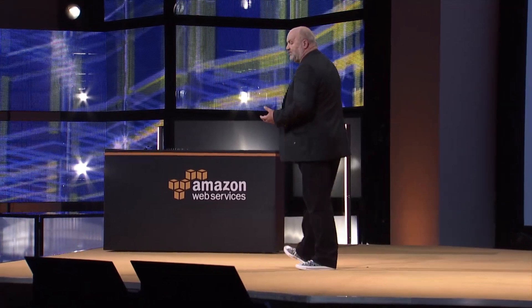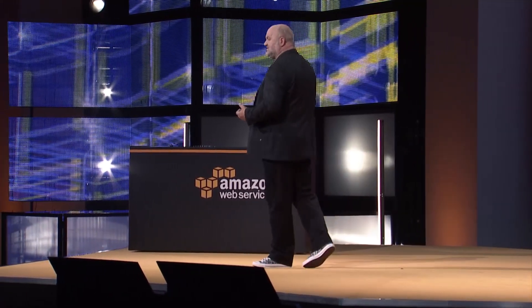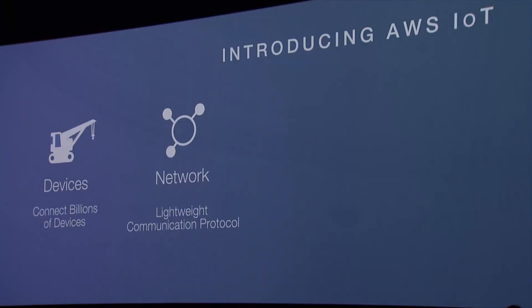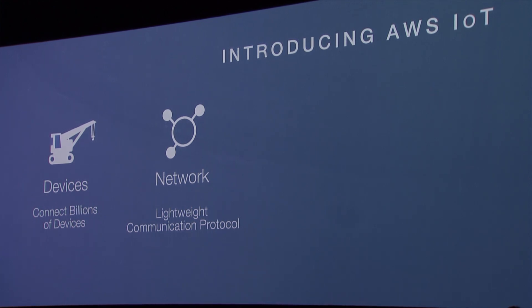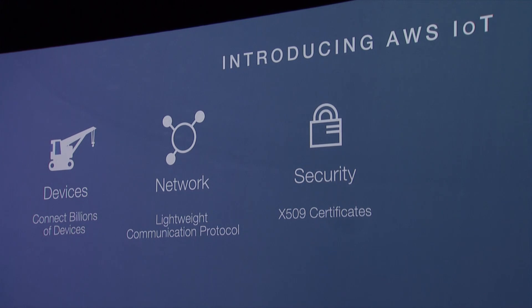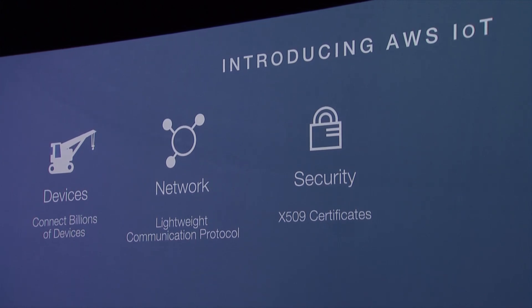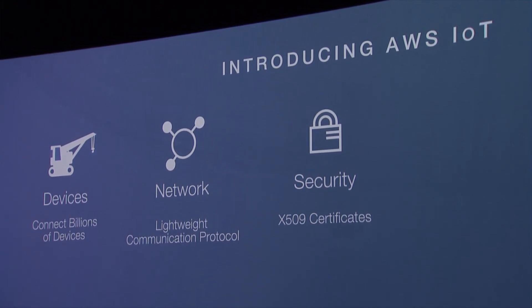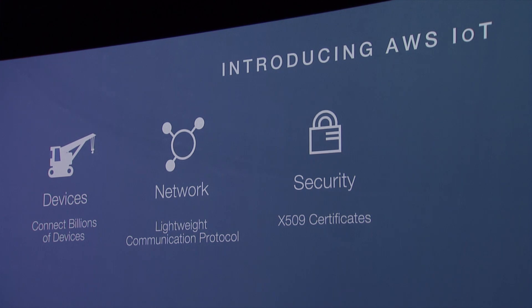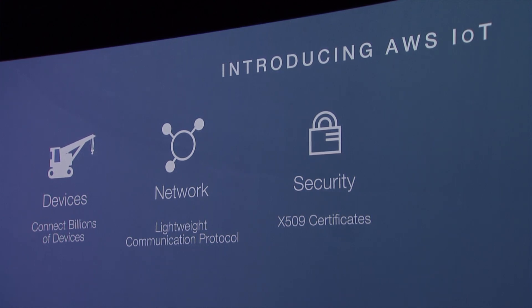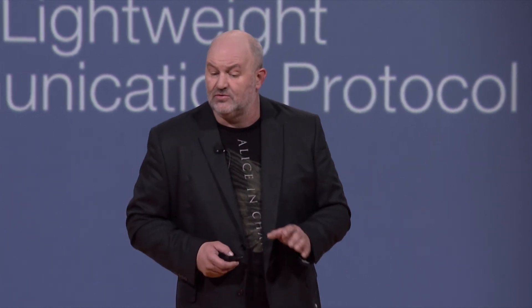We'll give you network capabilities with MQTT and HTTP to communicate back into your cloud application. We'll make sure that these devices have a unique identity using X509 certificates. You can have us generate the certificate for you, or you can bring your own certificate, so that you can securely identify exactly what the device is and make sure that the data is encrypted on the network.